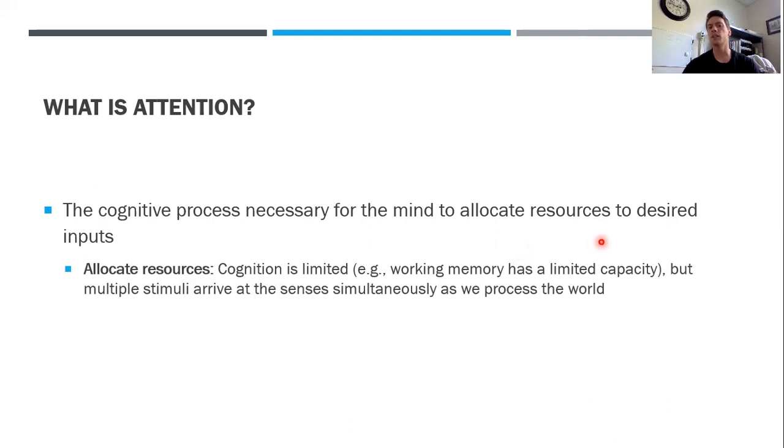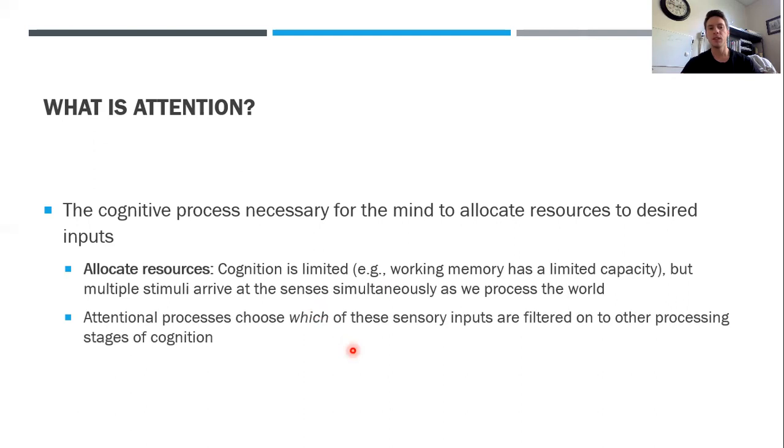When I say higher-order cognitive processes, I mean things like working memory. Attention is choosing which of the multiple stimuli in our world should we direct to higher-order cognitive processes. Attentional processes choose which sensory inputs are to be filtered onto other processing stages of cognition, such as working memory.